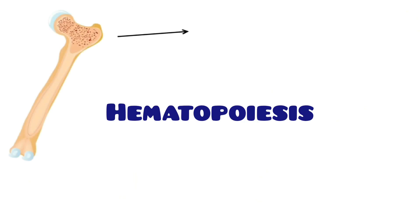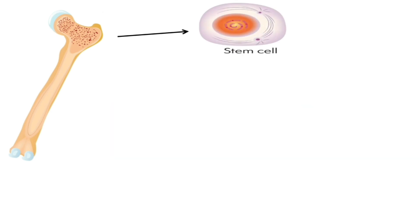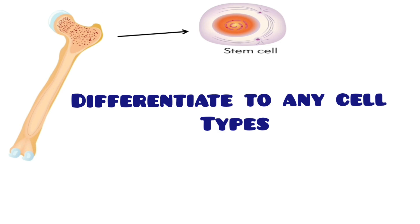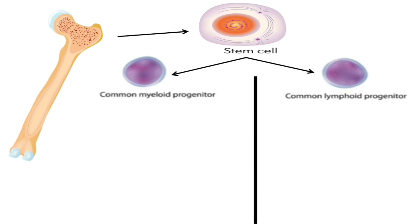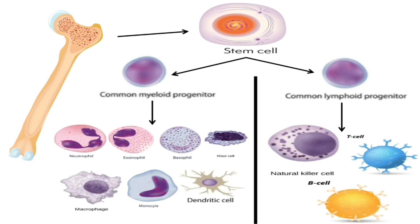Hematopoiesis, or the formation process of the soldiers, takes place in the bone marrow. The bone marrow has many stem cells — a stem cell is a cell with the ability to differentiate into any cell type. Here, stem cells differentiate into myeloid progenitor cells or lymphoid progenitor cells. Myeloid progenitor cells give rise to all soldiers except B cells, T cells, and natural killer cells, which come from the lymphoid progenitor cells.